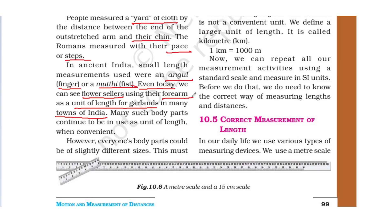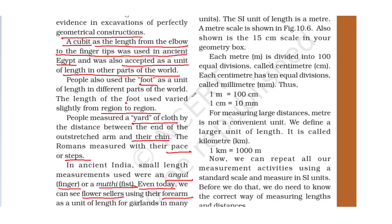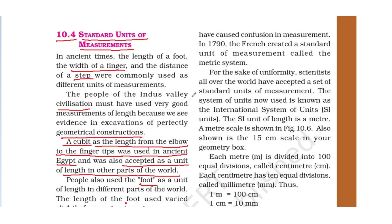Many such body parts continue to be used as units of length when convenient, such as hand span and foot. However, everyone's body parts could be of slightly different sizes, which must have caused confusion in measurements. In 1790, the French created a standard unit of measurement called the metric system.